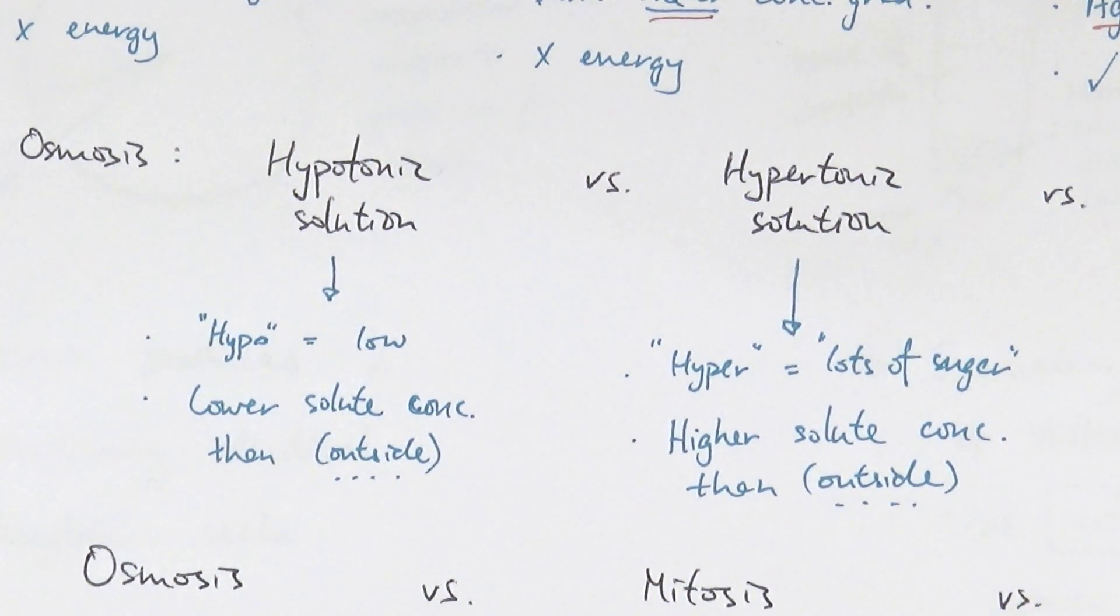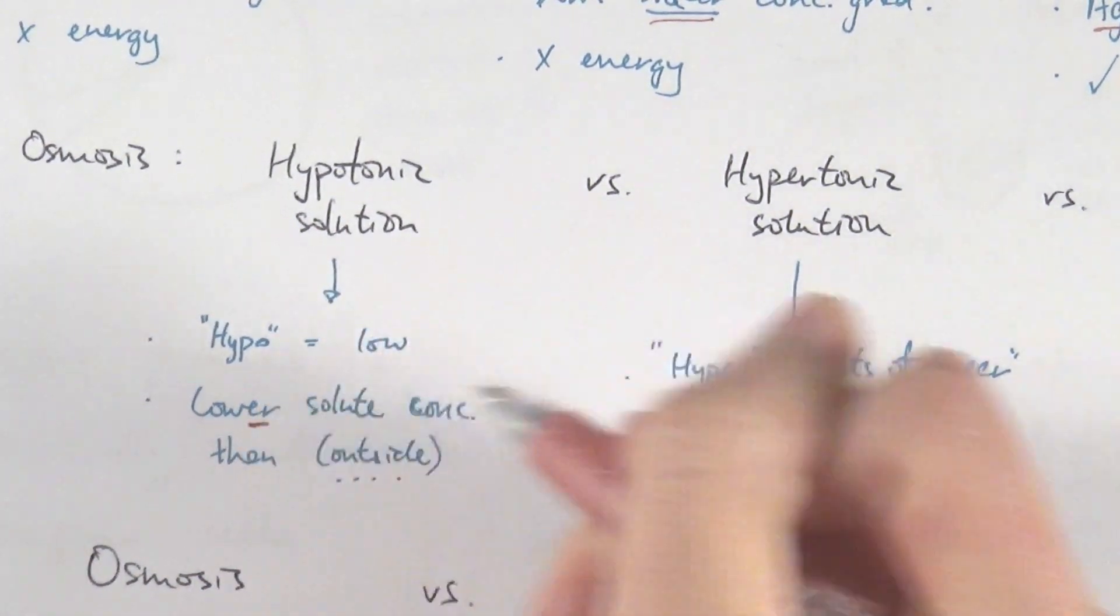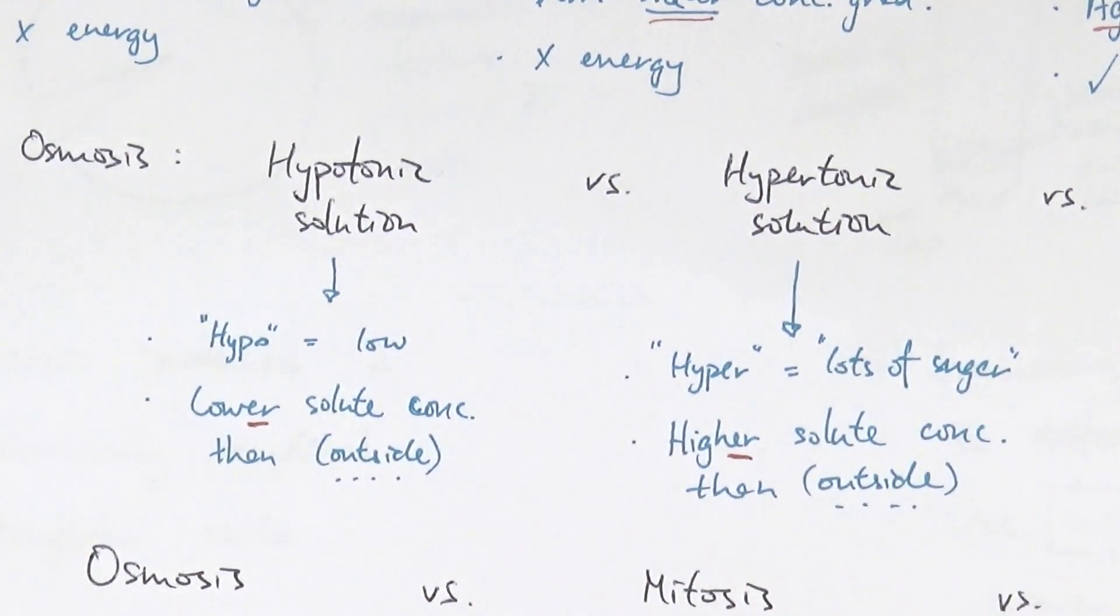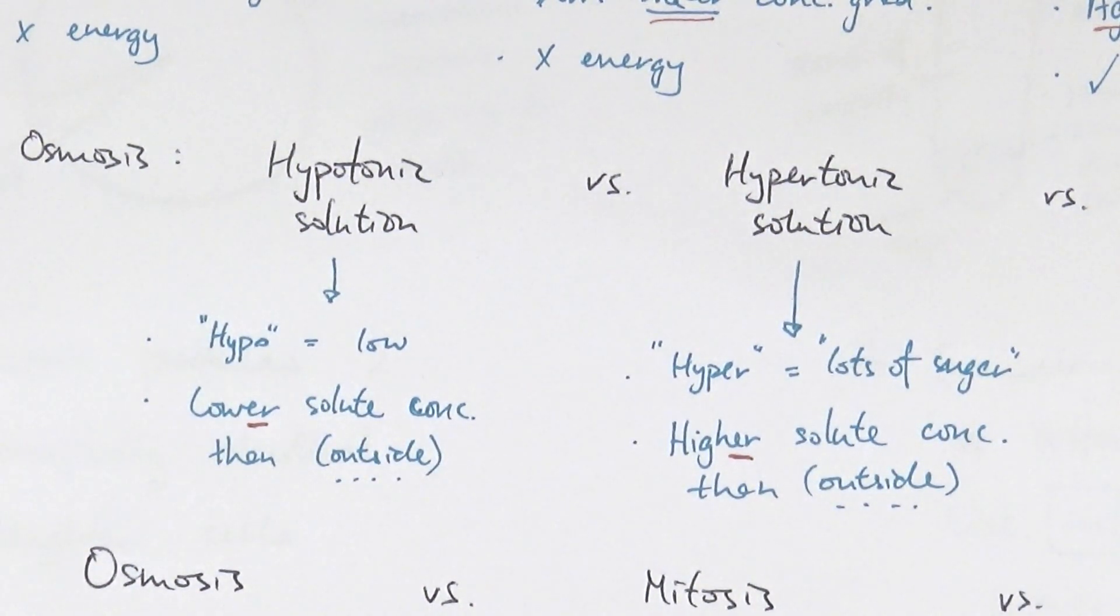Hypotonic solution is the exact opposite. Hypo means low. So hypotonic solution means it has a lower solute concentration than whatever it is. Again emphasizing the fact that it is comparative, lower or higher. So make sure that you include the ER in your answer.